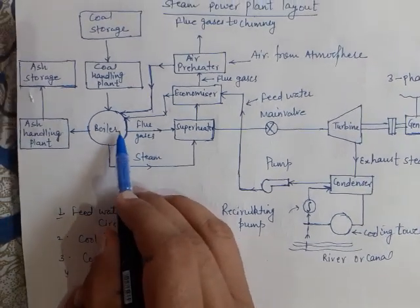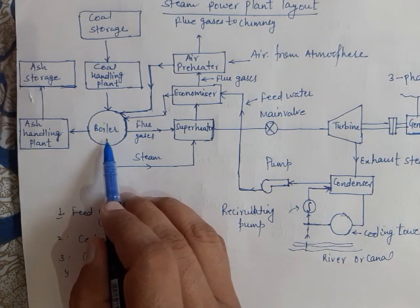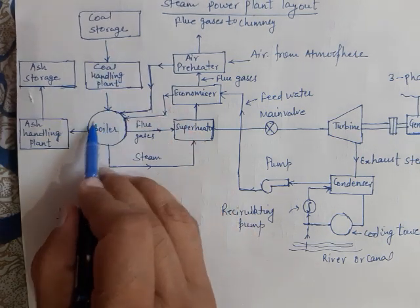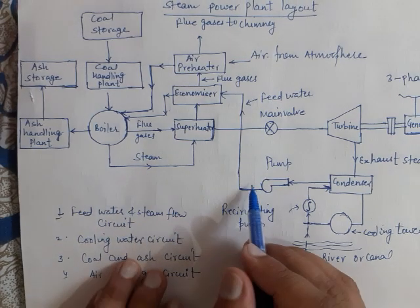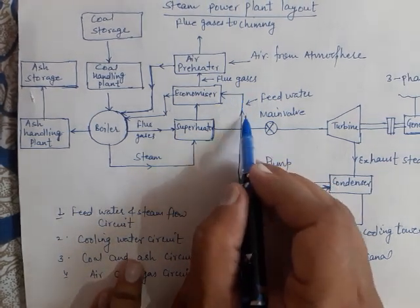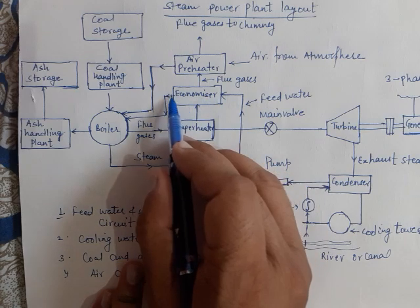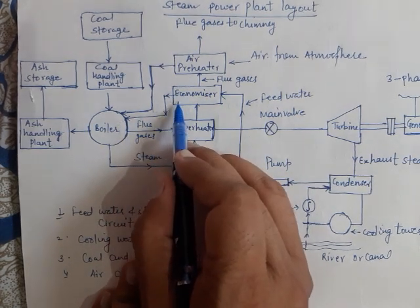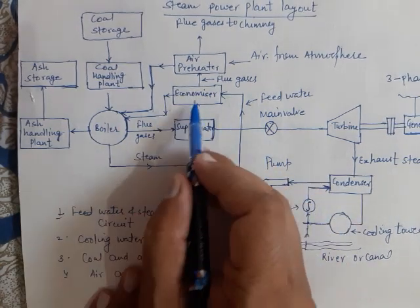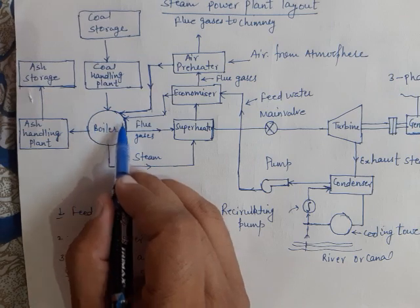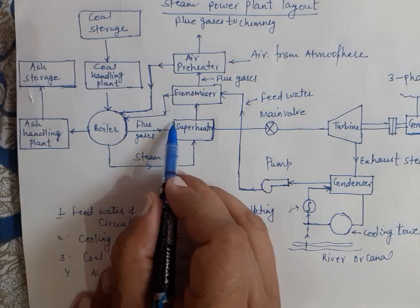The boiler is the component where steam is produced. Coal is supplied inside the boiler and combustion of the coal causes release of steam. The feed water enters through the economizer into the boiler — water first goes into the economizer and then to the boiler. This is because in the boiler, flue gases are generated.